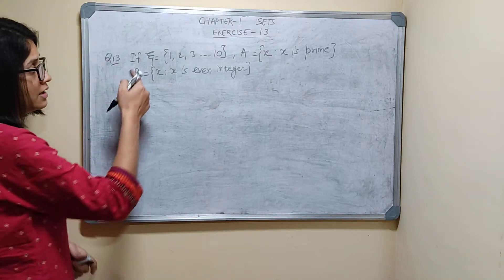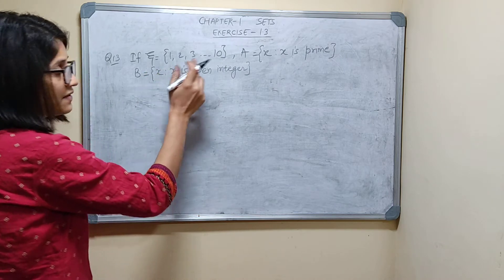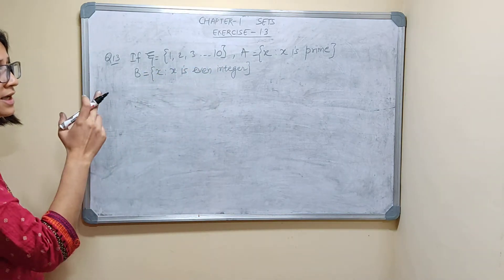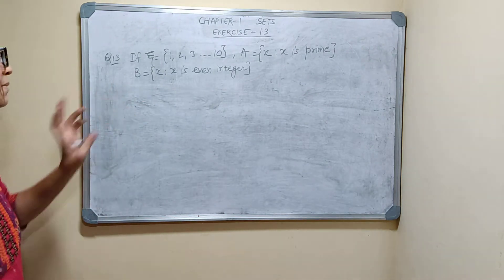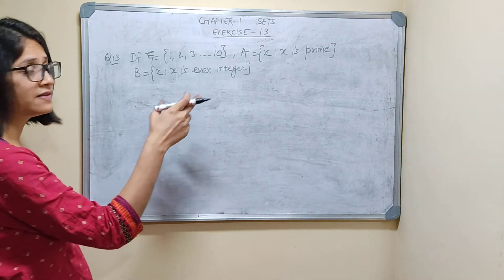Question number 13. The universal set is equal to 1 to 10. A is equal to x such that x is prime number, and B is equal to x such that x is even integer.